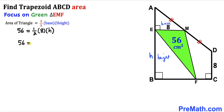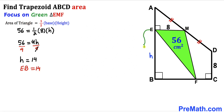Simplifying: 56 equals 4 times h. Dividing both sides by 4, the height h turns out to be 14 centimeters. Since EB is represented by lowercase h, our segment EB has a length of 14 centimeters.